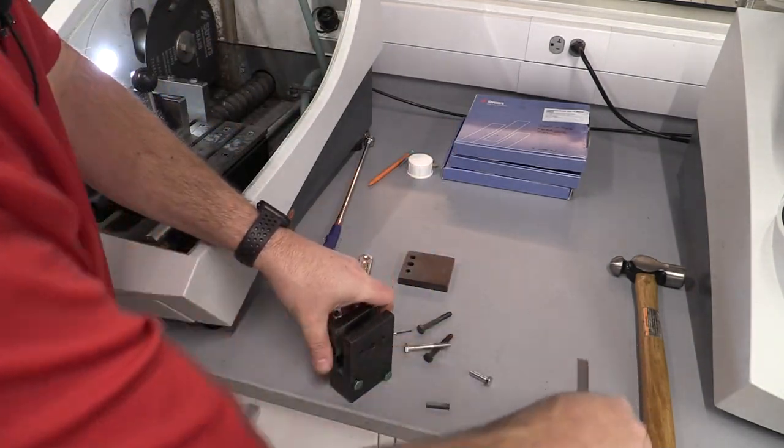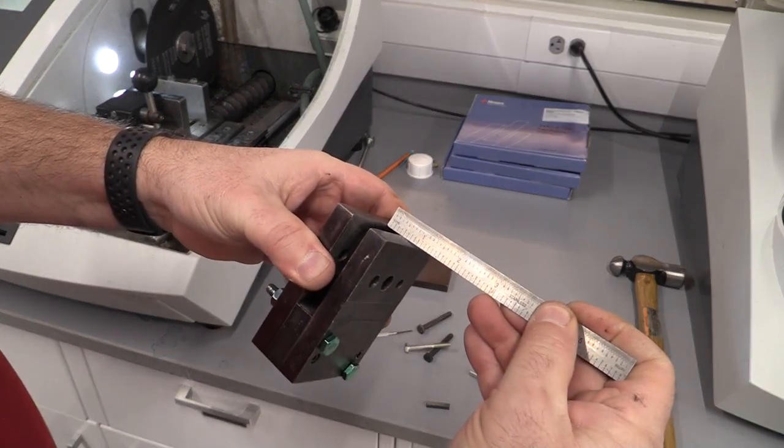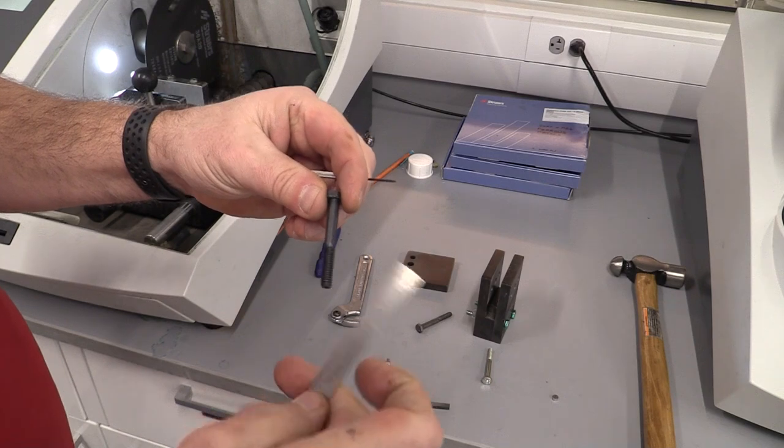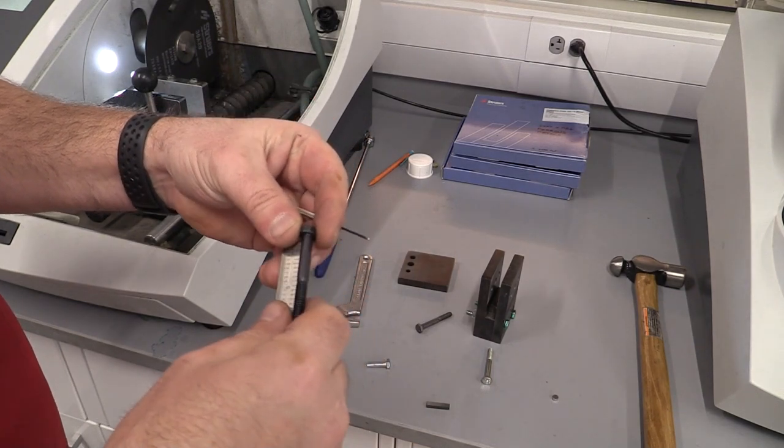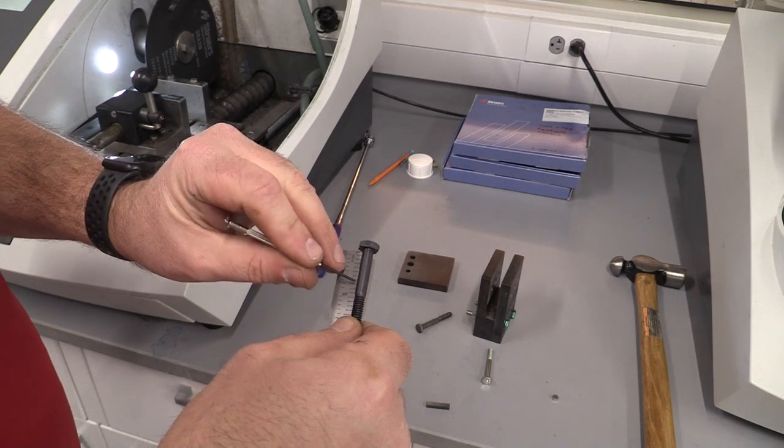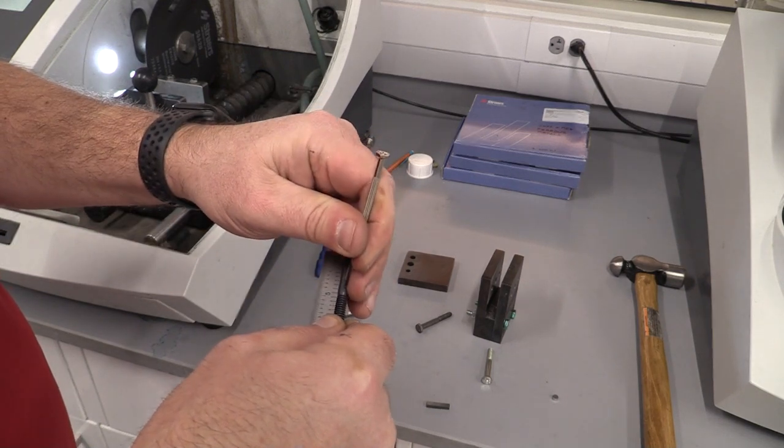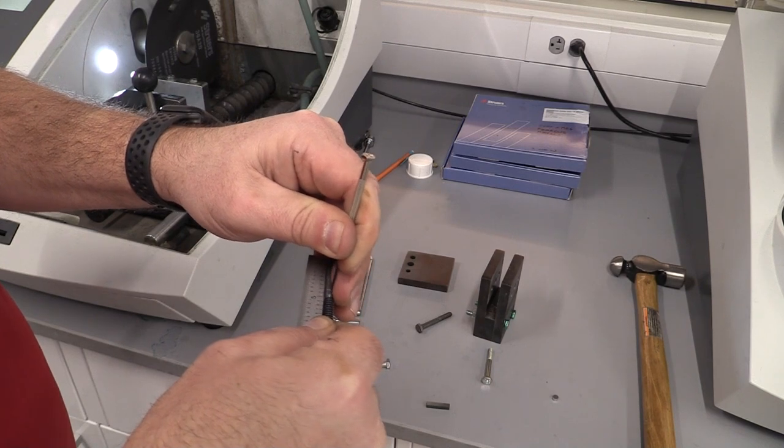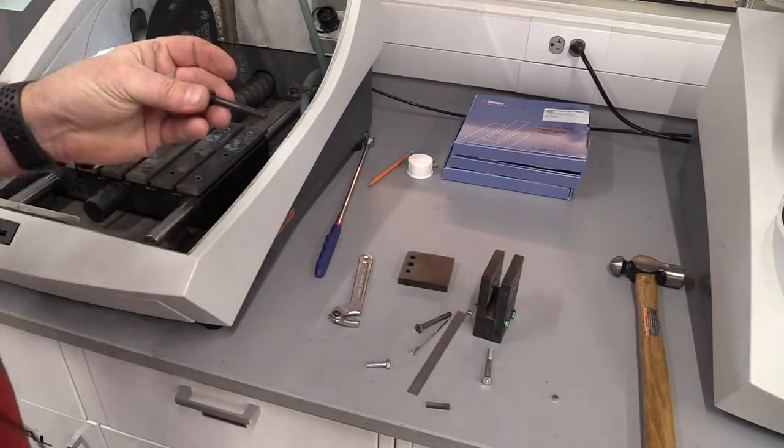I'm going to take my steel ruler and measure from there. I need to be less than an inch. I'm going to come in here, lay up my ruler, and count nine divisions. Right here's the ninth division. I'm going to scratch a line so I can see where I'm going to cut that.